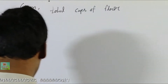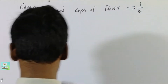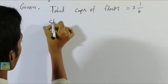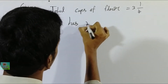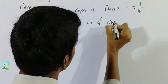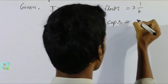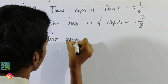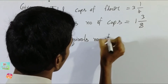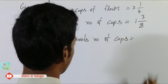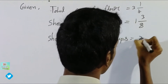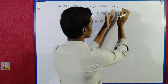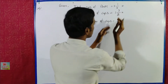The recipe requires 3 and 1/4 cups of flour in total. Radha has 1 and 3/8 cups. We need to find the difference. We need to subtract. The floor is a mixed fraction — we need to subtract one mixed fraction from another. In the last sum, we need to subtract a mixed fraction.